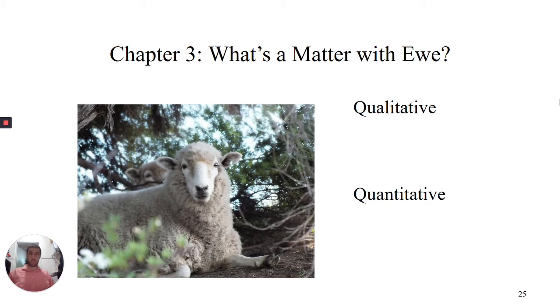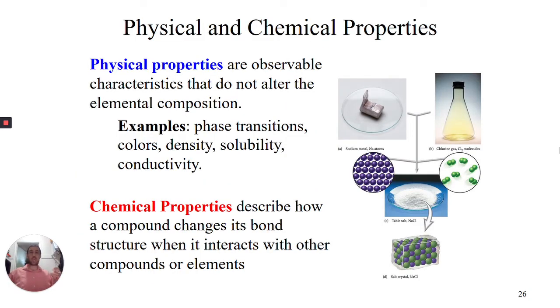When we move into chemistry, we can make these qualitative observations about the physical and chemical properties. Physical properties are observations we can make on substances where the identity of that substance doesn't change. If I test its phase, that doesn't change it to a liquid or gas, and even then it doesn't change the chemicals that make it up.